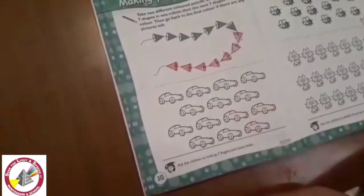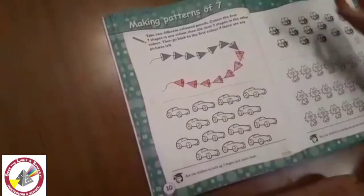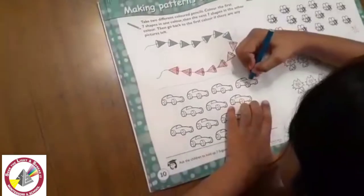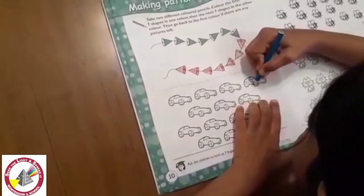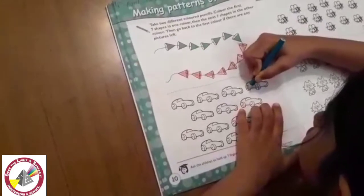All right. So you have to choose a color to color the first seven. All right. Go ahead. Color the first seven. Make sure you keep counting the cards so that you know how many you've covered.